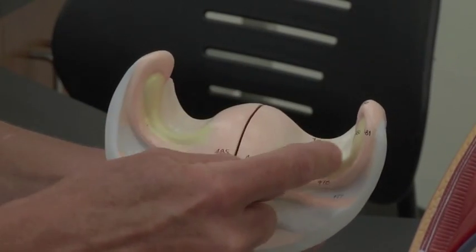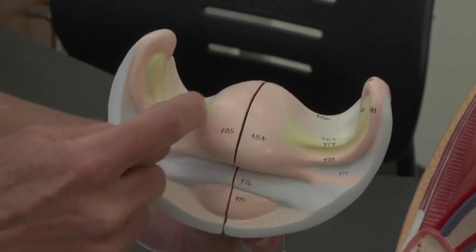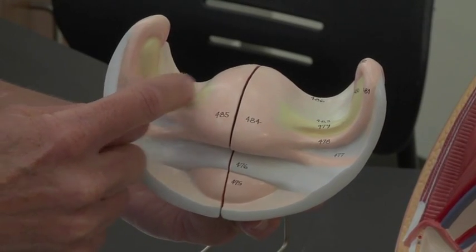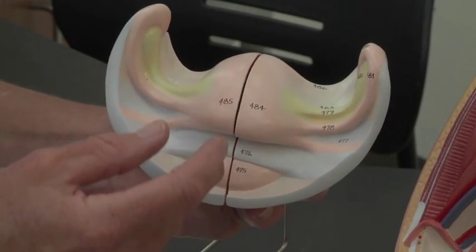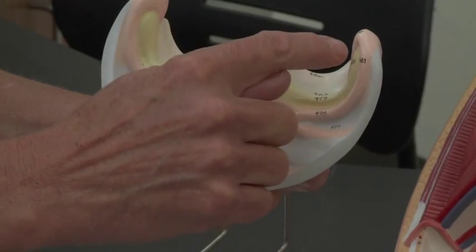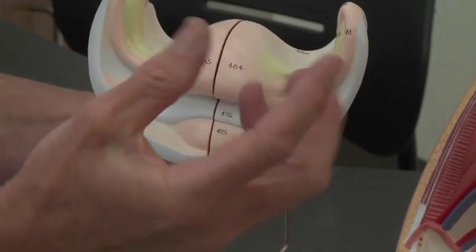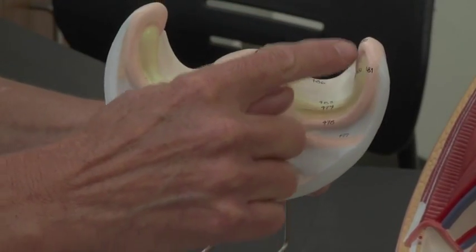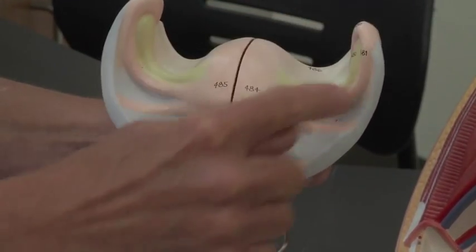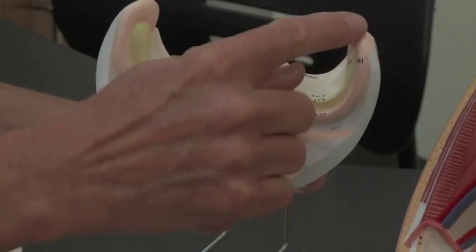Each one of the ovaries is suspended in the pelvic cavity by an ovarian ligament which is attached to the uterus. The ovaries are literally just sitting out there; they're not physically connected to the uterus by these fallopian tubes or ovarian tubes here.